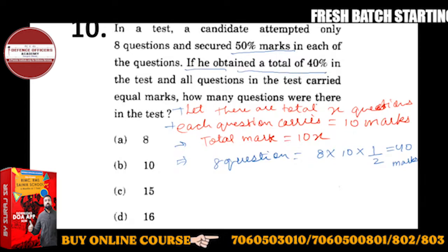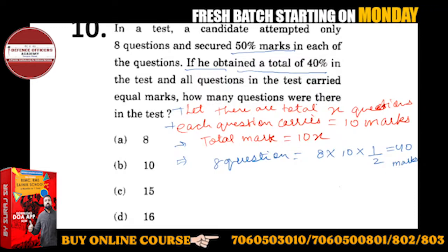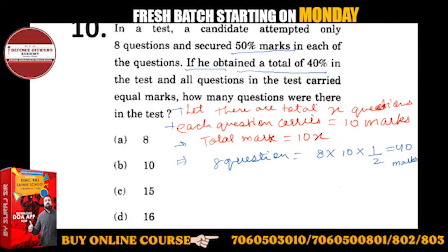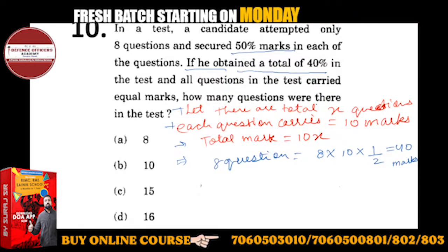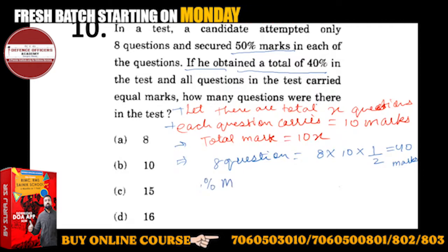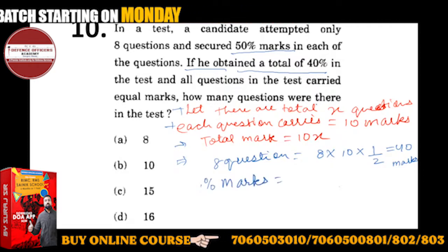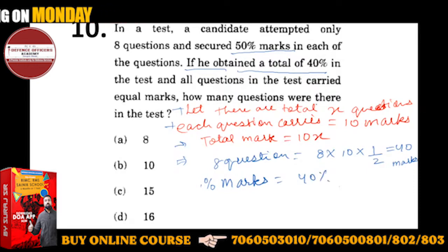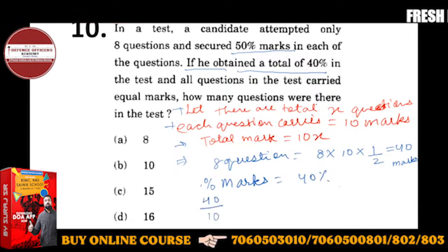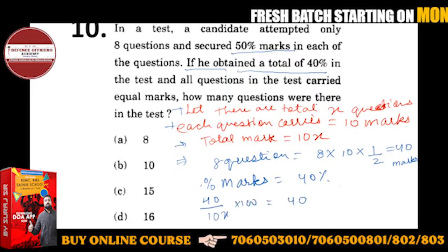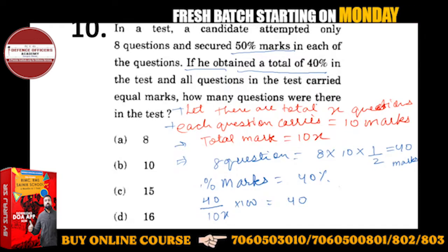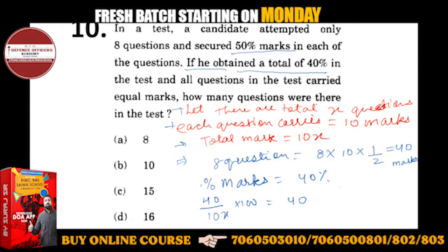Percentage निकालने का तरीका — marks कितने हैं उसके: 40, out of total marks 10x, into 100 कर दूँगा तो I'll get percentage. तो 40 upon 10x into 100 equals 40%. बस इसको cross multiply करो, solve करो, and x निकालो. x का मतलब है the total number of questions.